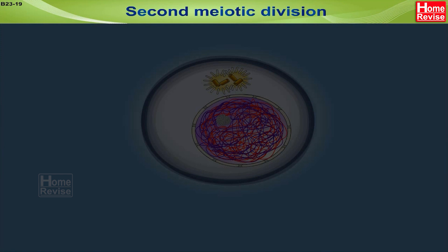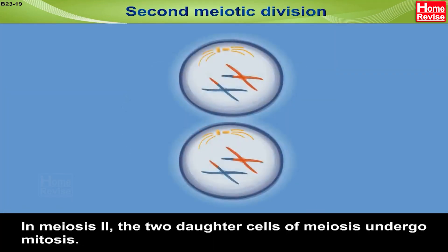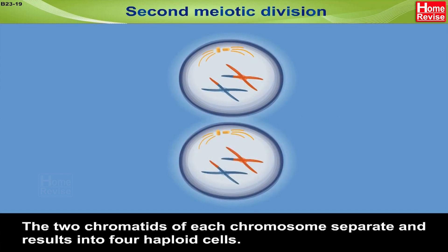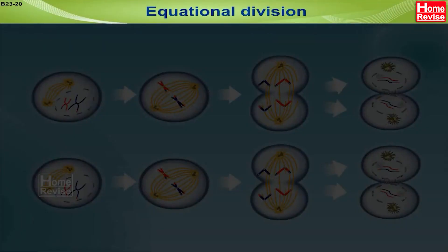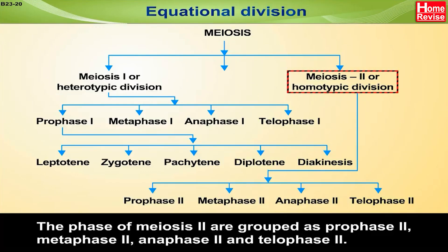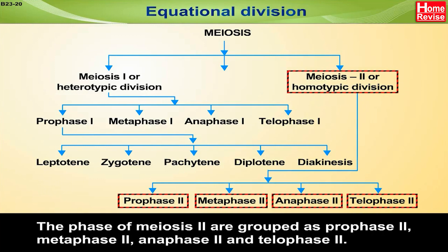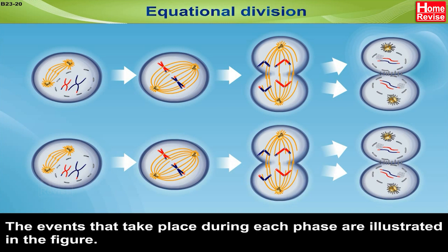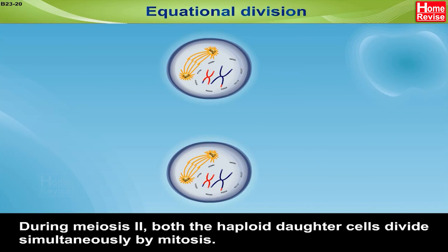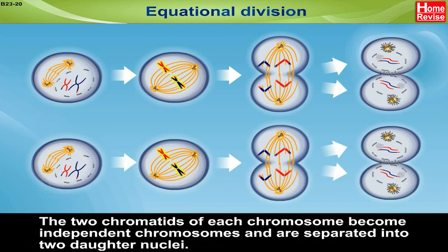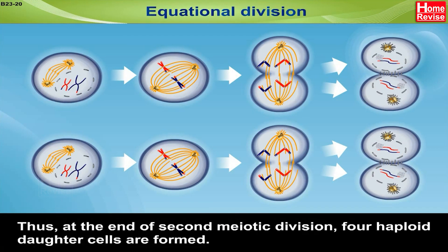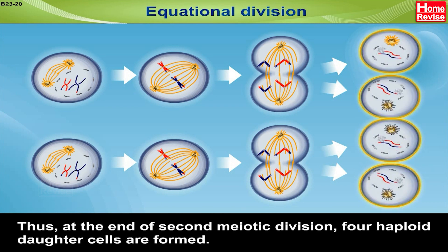Second meiotic division: In meiosis II, the two daughter cells of meiosis I undergo mitosis. The two chromatids of each chromosome separate and result in four haploid cells. The phases of meiosis II are grouped as prophase II, metaphase II, anaphase II, and telophase II. During meiosis II, both haploid daughter cells divide simultaneously by mitosis. The two chromatids of each chromosome become independent chromosomes and are separated into two daughter nuclei. Thus, at the end of the second meiotic division, four haploid daughter cells are formed.